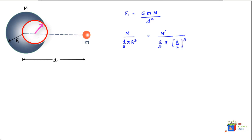So when we do this we find that M dash, or the mass of the cavity, or rather the mass that has been taken out to make the cavity, would equal capital M by 8.